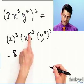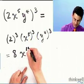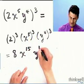Well, it's multiplication, because I'm raising something to a power to another power, so I multiply these, and I get 15. That's what we just saw. And then I have y to the 4 times 3, which is 12.